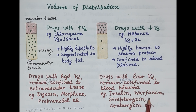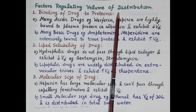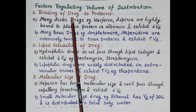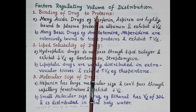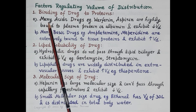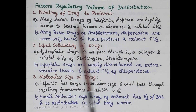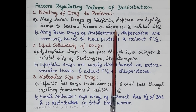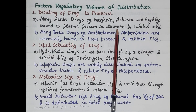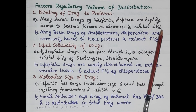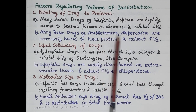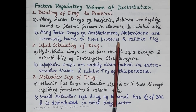Now let's study factors regulating volume of distribution. The first factor is binding of drug to proteins. Proteins are found in plasma — for example, albumin, termed a plasma protein — and also in tissues. Some drugs show affinity to plasma proteins while others bind to tissue proteins. Many acidic drugs, such as warfarin and aspirin, are highly bound to albumin, so they remain confined to the plasma and exhibit low volume of distribution. Whereas many basic drugs, like amphetamine and meperidine, are extensively bound to tissue proteins, and therefore exhibit a large volume of distribution.